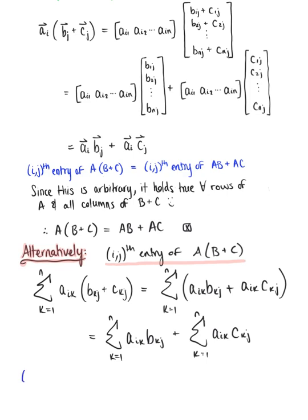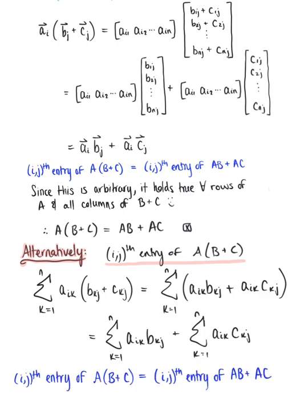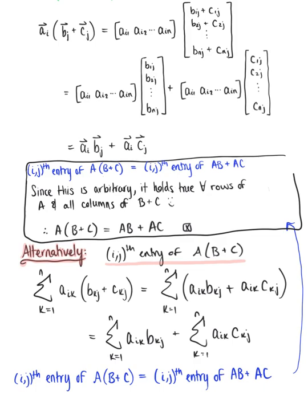What we have shown here is that the i-th j-th entry of A times (B+C) equals the i-th j-th entry of AB plus the i-th j-th entry of AC. Since this is arbitrary, it holds true for all rows of matrix A and all columns of matrix B plus C, therefore confirming that the left distributive law of matrix multiplication is true.